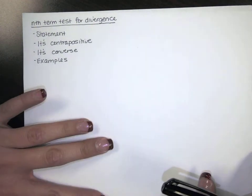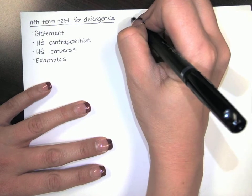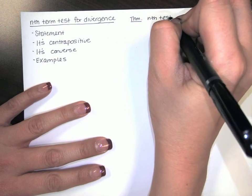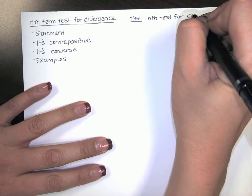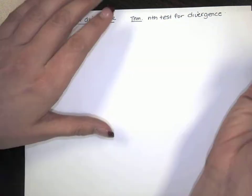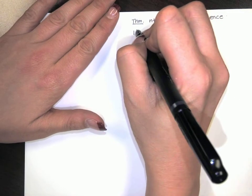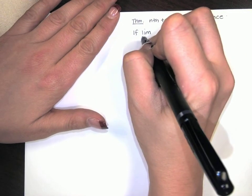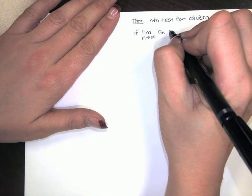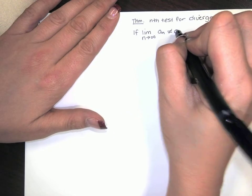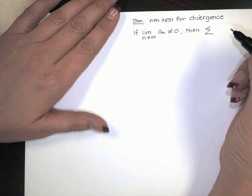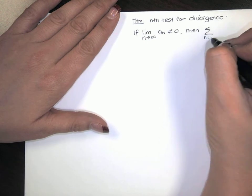So here's a statement of the theorem. It says if the limit as n goes to infinity of the nth term of a series is not equal to zero, then the corresponding series must diverge.